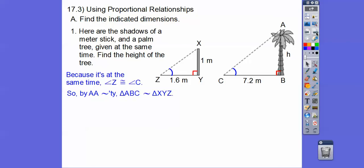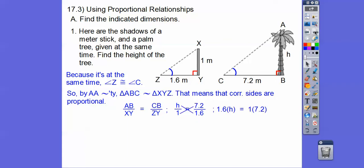So those triangles are similar by angle-angle similarity. So we can do lefty over righty equals lefty over righty. So righty over lefty equals righty over lefty. All right, and then cross multiply. So we get 1.6h equals 7.2. And so we get 4.5 meters. So 4.5 meters is going to be the height of this tree.